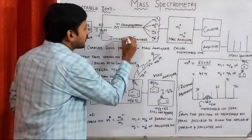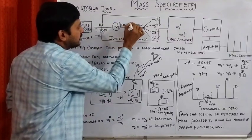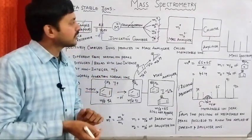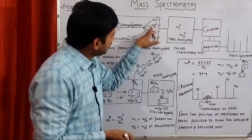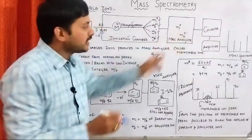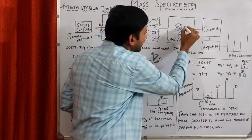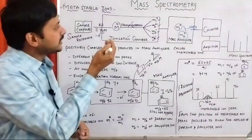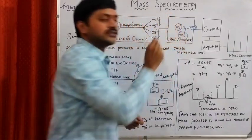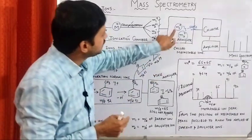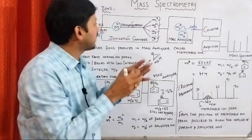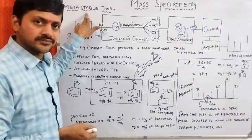In the ionization chamber, we observe the formation of the molecular ion and the fragmentation process. Suppose a radical cation and a radical are present, and after entering into the mass analyzer these are subjected to further fragmentation — meaning ions coming from the ionization chamber are subjected to fragmentation in the mass analyzer. Those ions produced there are commonly called metastable ions.